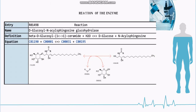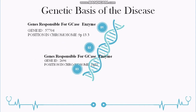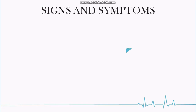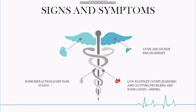Regarding the genetic basis of the disease: the genes responsible for glucocerebrosidase enzyme are Gene ID 57704, located at chromosome 9p13.3, and Gene ID 2696, located at chromosome 1q22. Specific genetic mutations are also identified. Signs and symptoms include liver and spleen enlargement, low platelet count, bleeding and clotting problems, anemia, bone infarction, joint pain, avascular necrosis, and sometimes accumulation in lungs and heart.